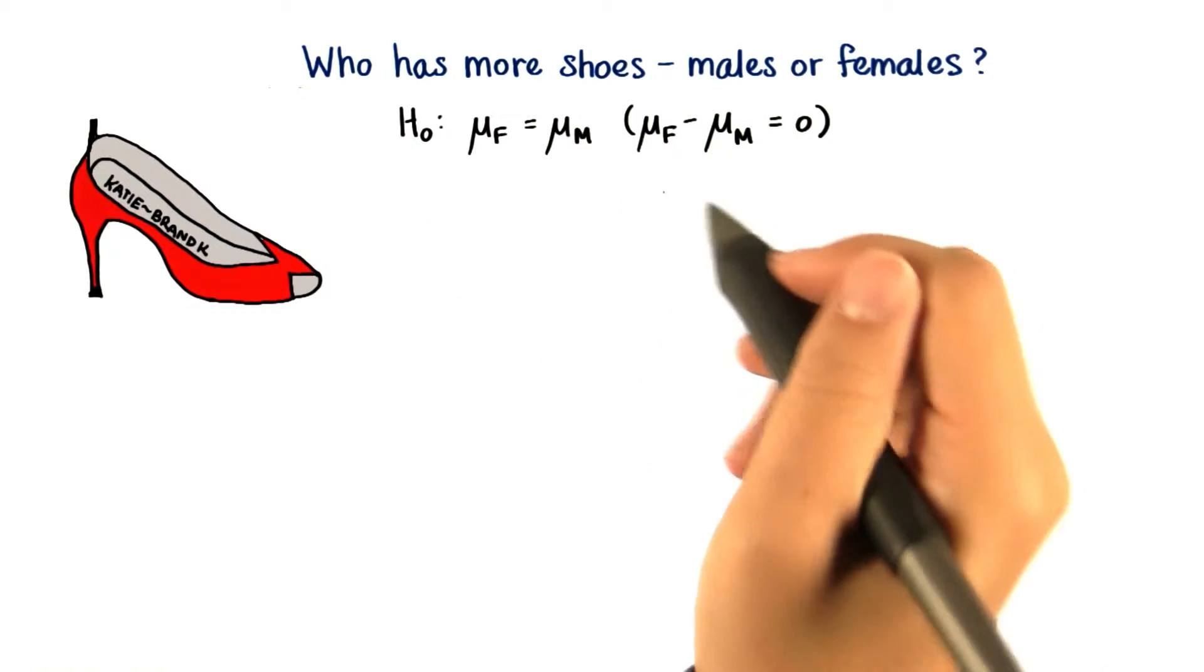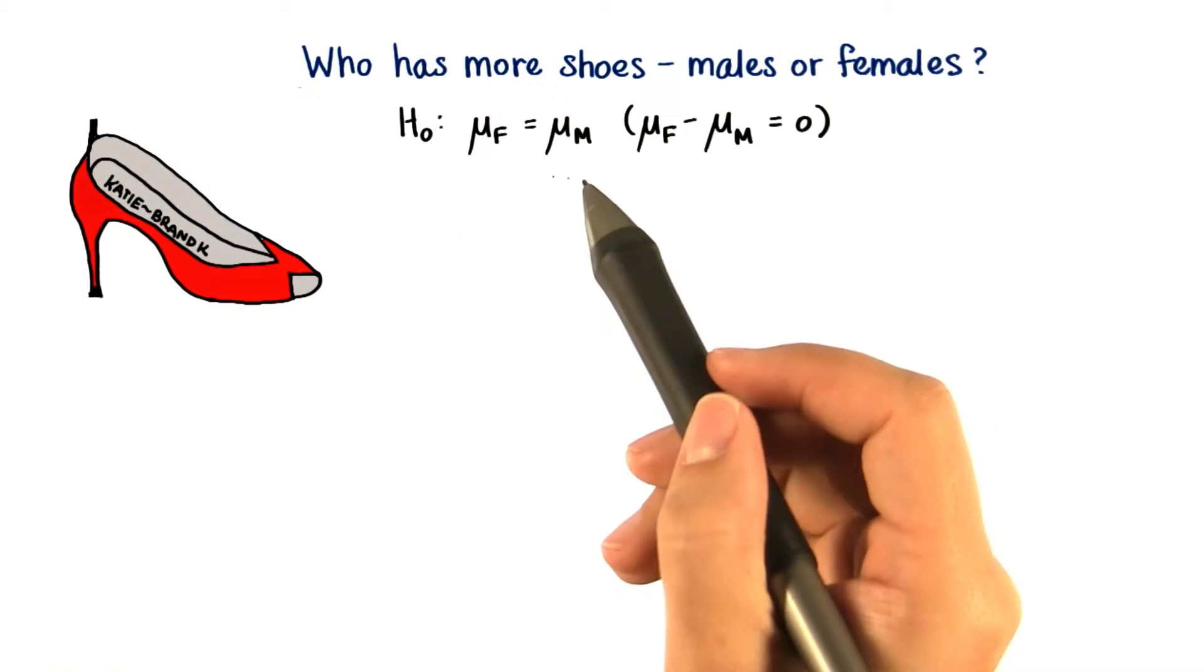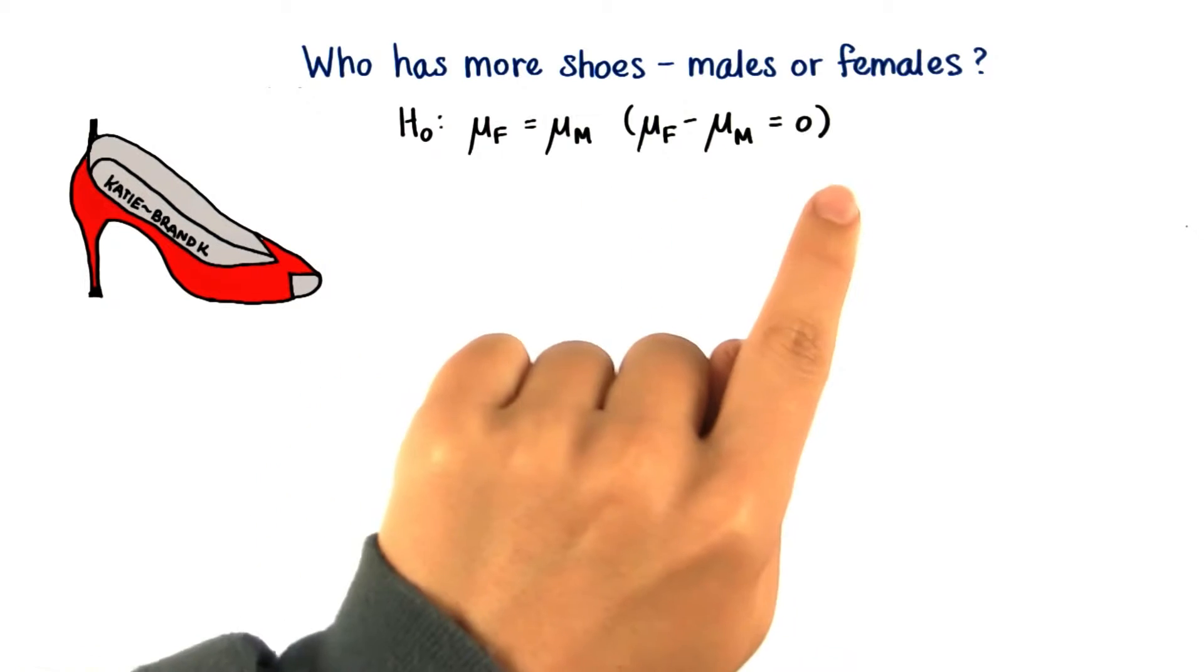Our null hypothesis is that there's no difference. The mean number of shoes owned by females is equal to the mean number of shoes owned by males, or that the difference is zero.